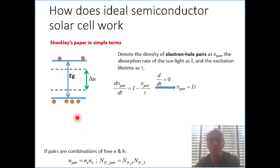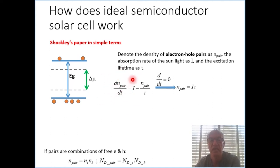Really, what we say is that we are generating pairs and we are losing pairs due to recombination. So we can write a really simple rate equation where the rate of change in the density of electron-hole pairs goes up with light generating pairs and goes down as we have recombination with a given lifetime.